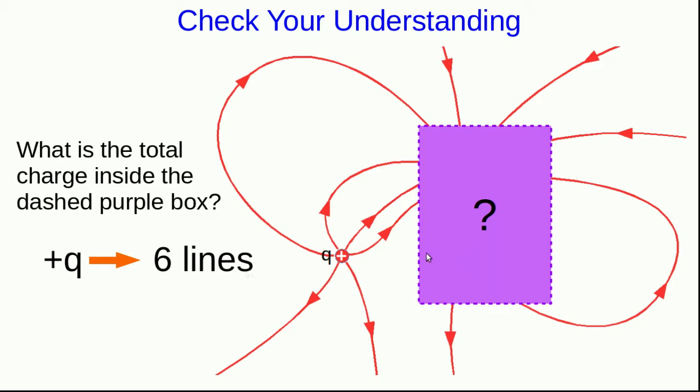Now we have to count the total number of lines passing through this surface, remembering that we have to add the number of lines out to negative the number of lines in.